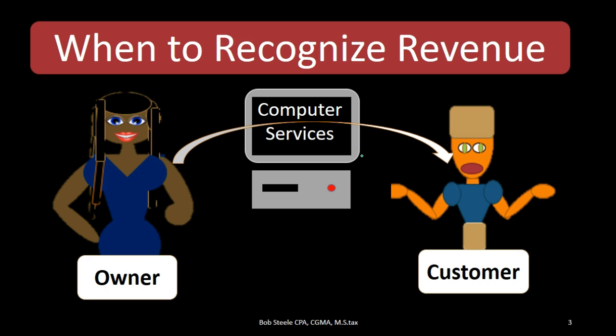We could imagine a situation where the customer paid us in the past for the work we did today. That still means the work we did today means we have now earned the revenue related to the cash received in the past. When the customer gave us that money, they basically had a contract for us to do the work, and when we did the work, we earned it. We can also think of a situation where the customer is going to pay us in the future — we still earned the revenue today when we did the work, and the customer fulfills the contract when they pay us later.